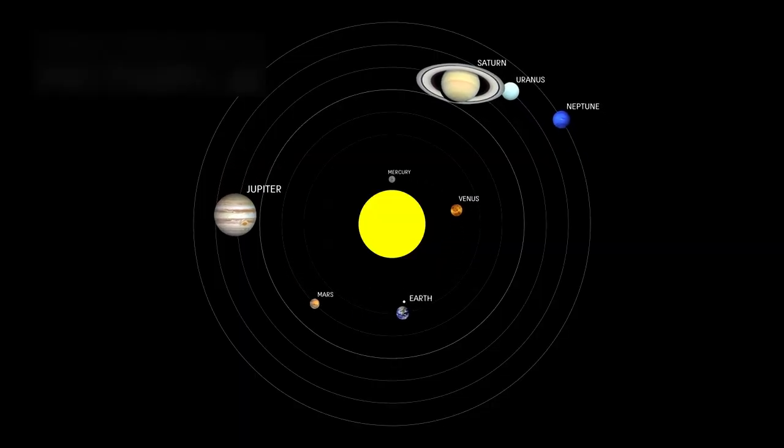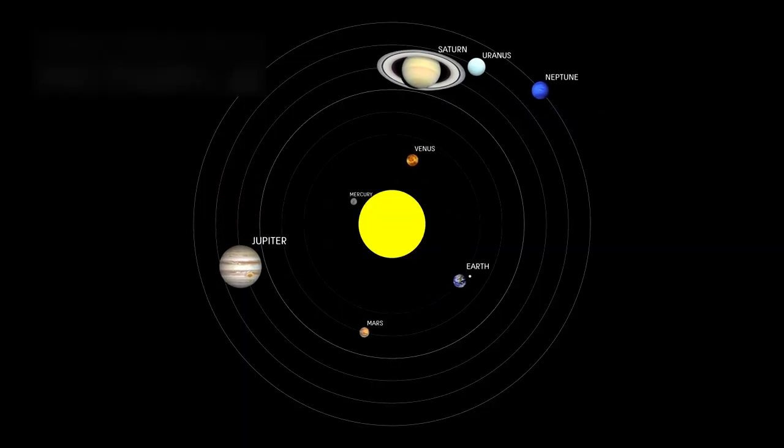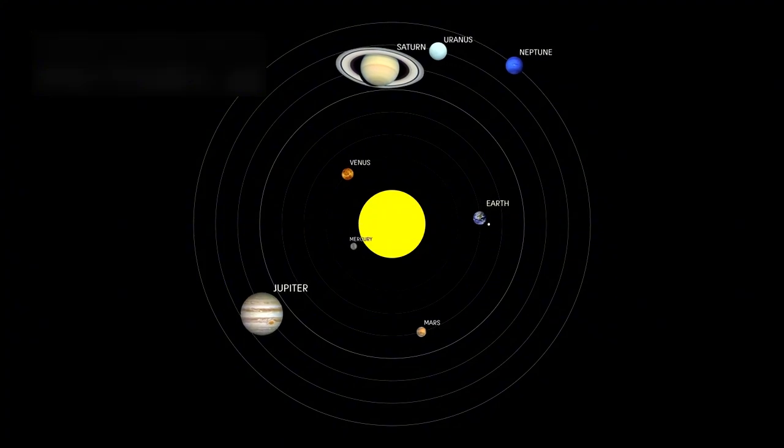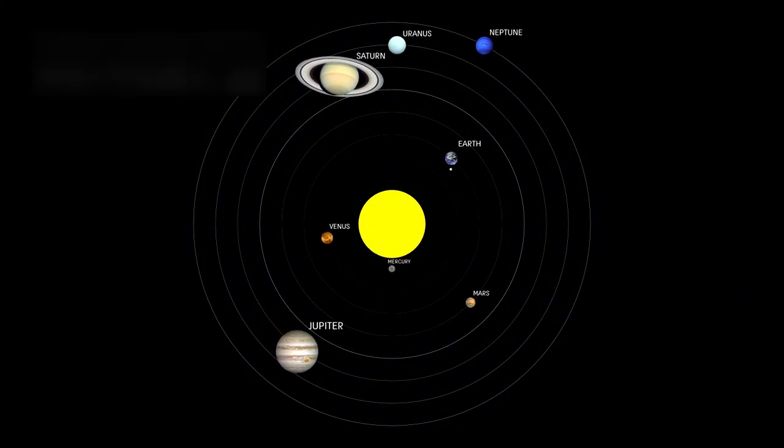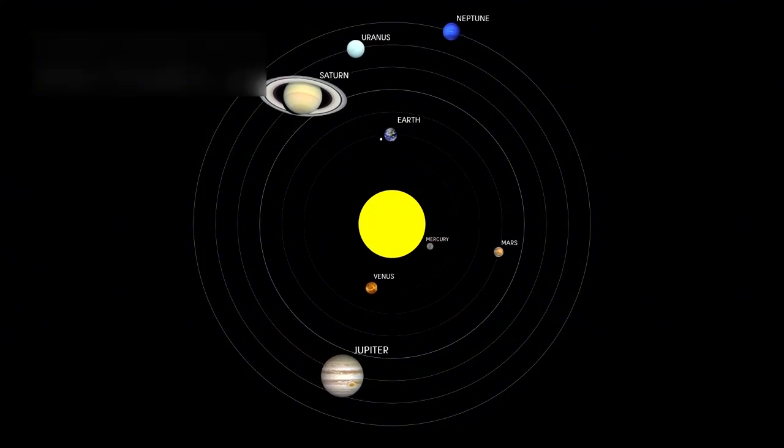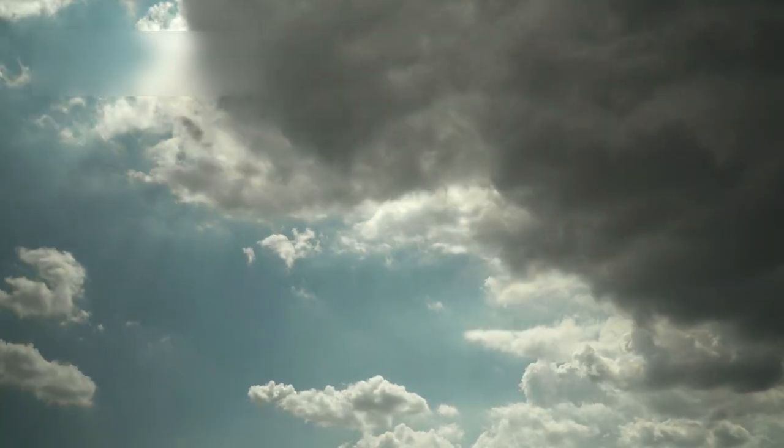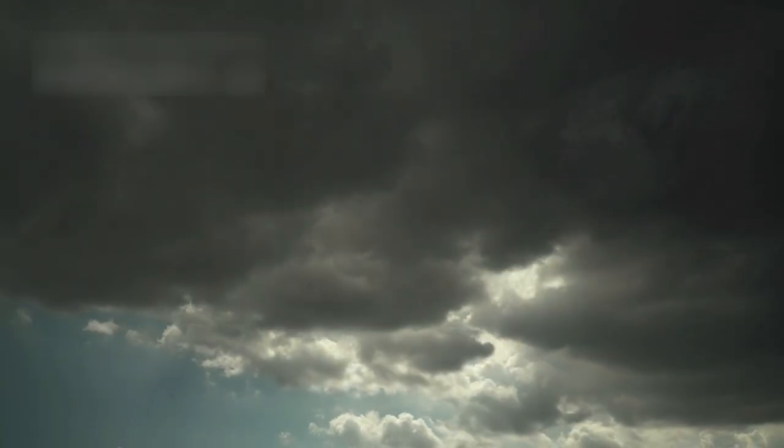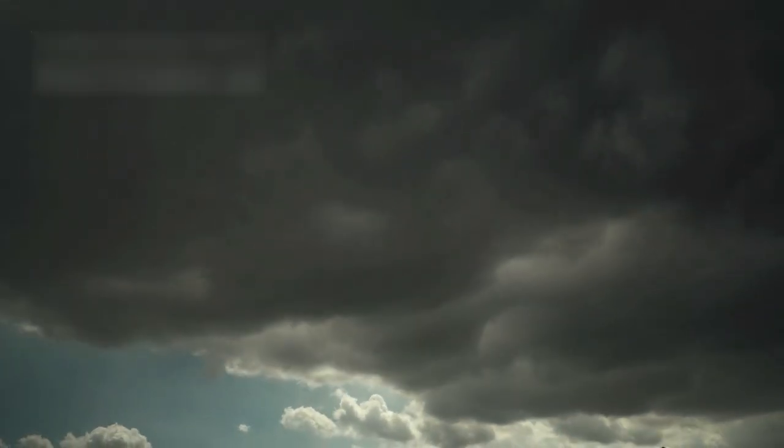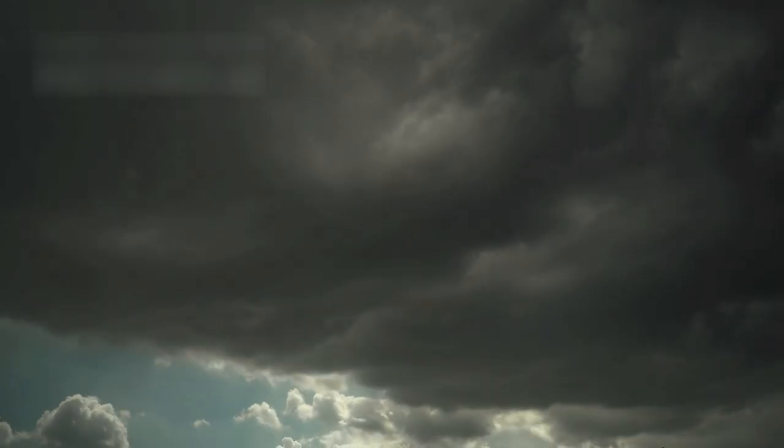Voyager 1 then traveled to Saturn, where it discovered one of the most unusual features ever seen in the solar system, a massive hexagon-shaped storm at the planet's north pole. The storm stretches thousands of miles across, and its shape is so perfect that even today scientists study it to understand how such a structure can form naturally.